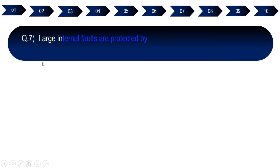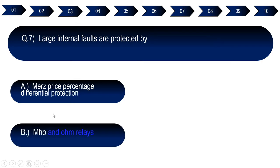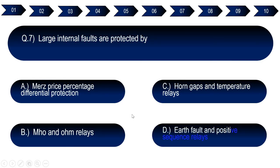Question number seven: Large internal faults are protected by. Option A: Merz-Price percentage differential protection. Option B: Mho and Ohm relays. Option C: horn gaps and temporary relays. Option D: earth fault and positive sequence relay. The right answer for question number seven is option A — Merz-Price percentage differential protection.